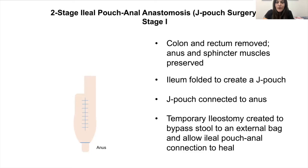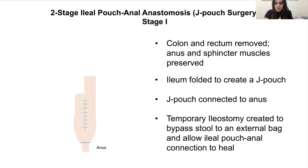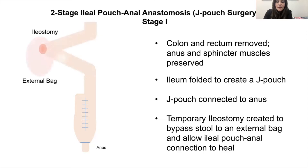Because this pouch has to be stretched down into the pelvis and is commonly under tension, there is a risk that the connection to the anus can leak. If that leaks, bowel contents can spill into the abdomen and patients become sick. So to prevent that leak from making you sick if it happens, we actually perform a temporary ileostomy — a bag that you wear outside on your abdominal wall. This bypasses stool to the outside world into an external bag and allows the J-pouch to anus connection to heal safely before you start using the pouch.